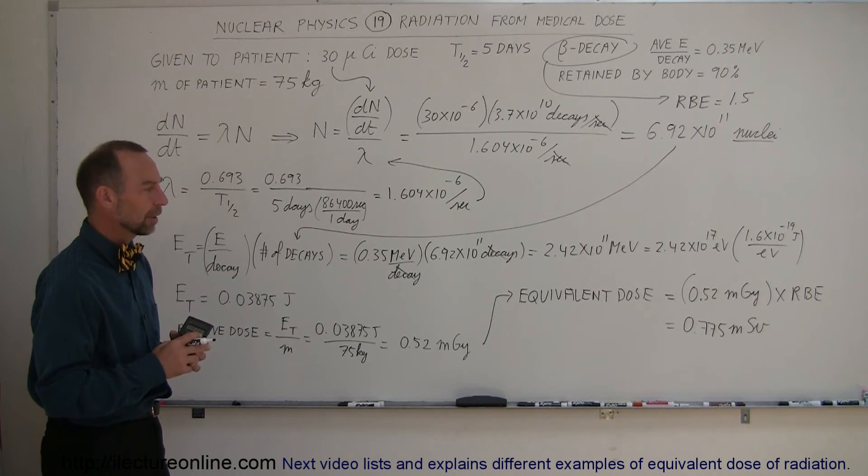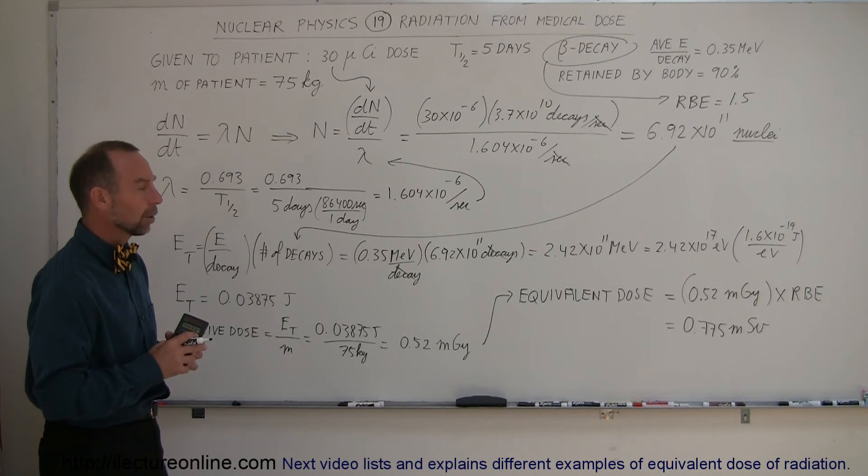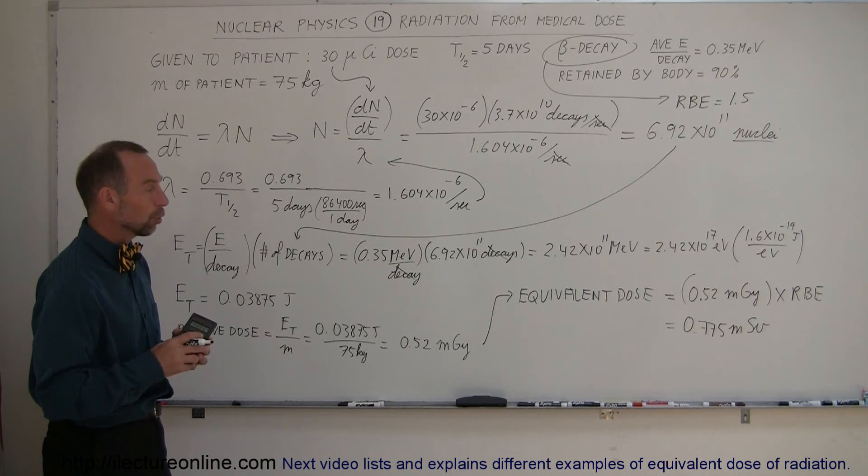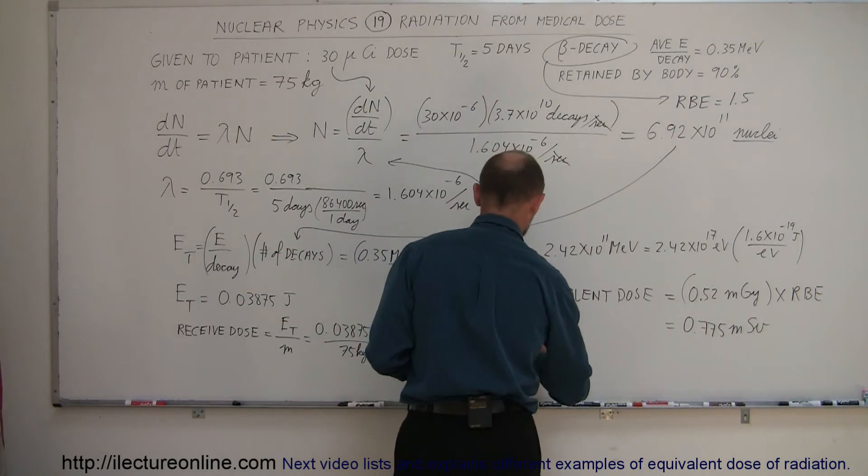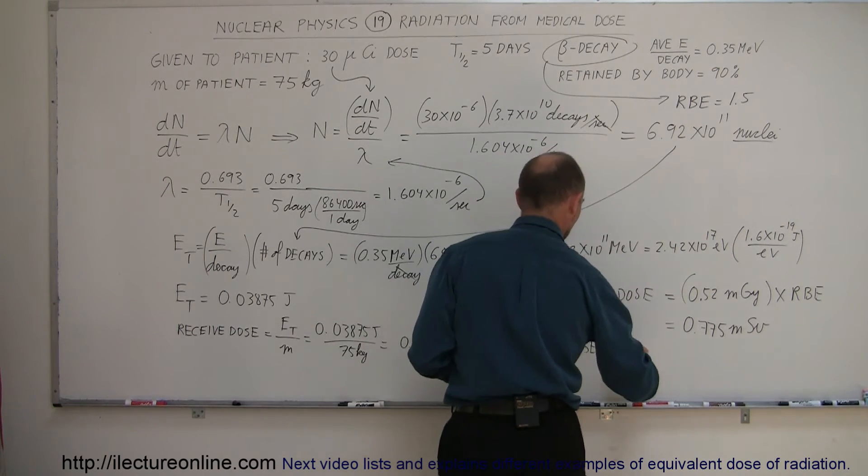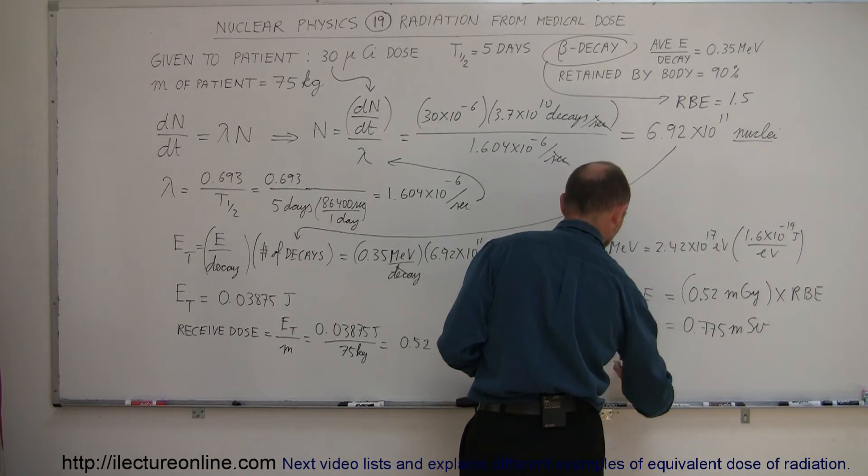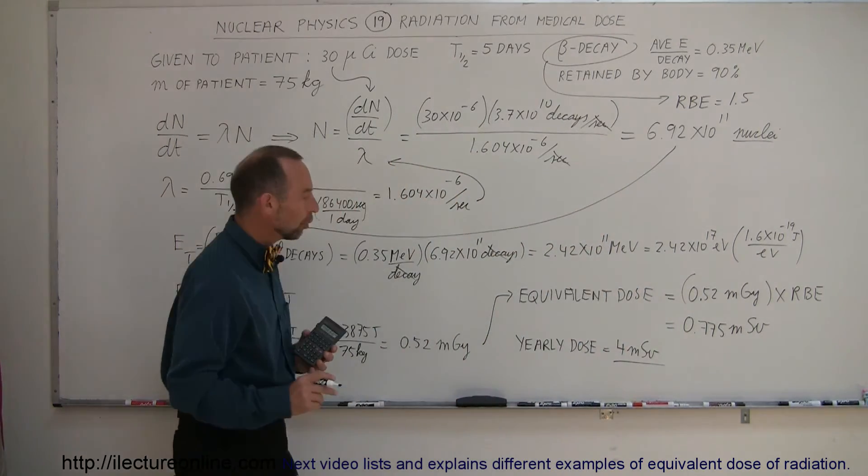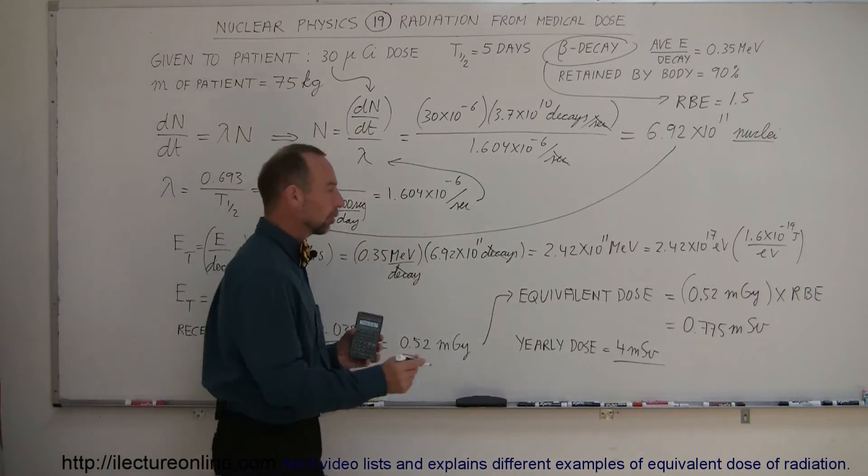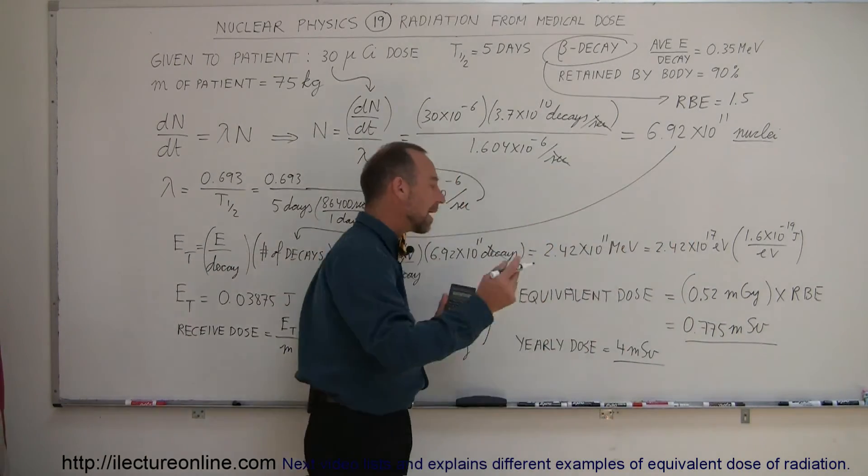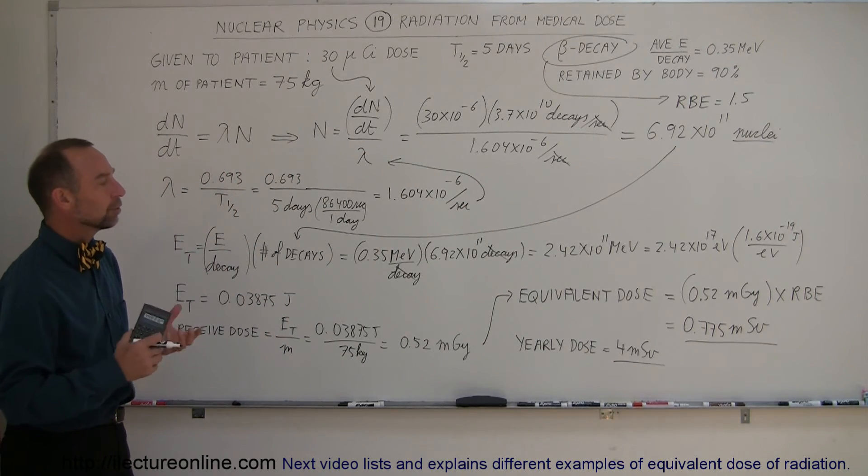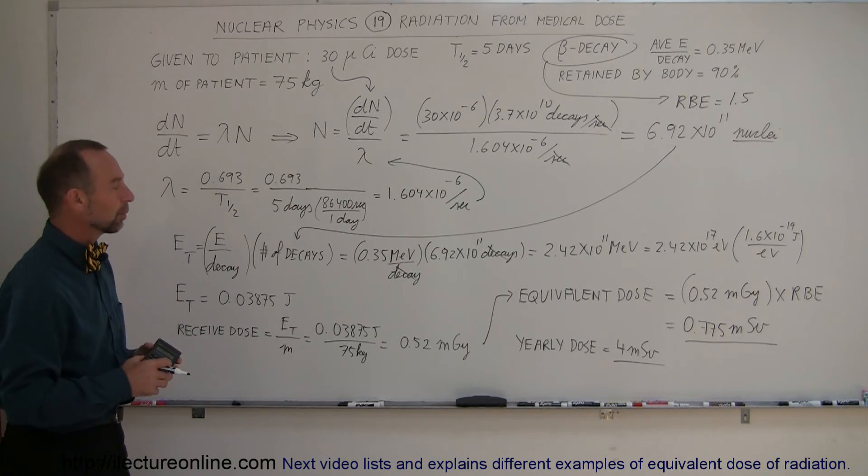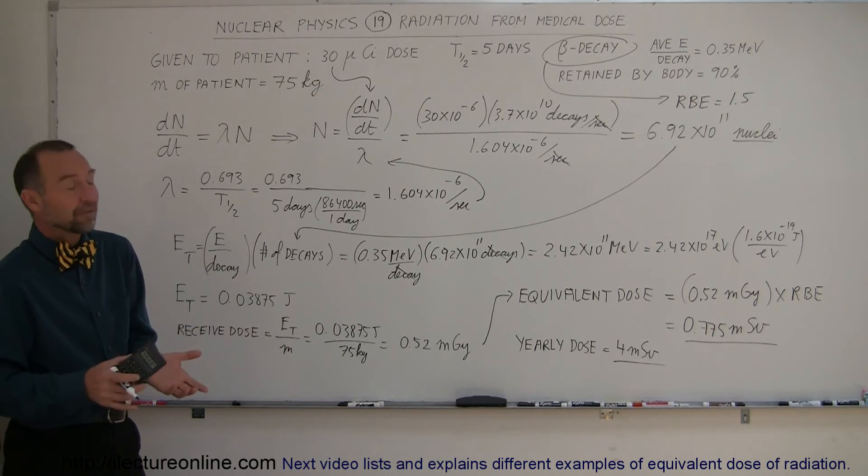All right, now is that a significant amount of medicine? Well, let's compare that to what we normally receive during any given year living on the earth. The yearly dose to natural causes is equal to about four millisieverts. So if our yearly dose to natural causes is four millisieverts and the amount of dose that we receive from the medicine is about one-sixth of that, that means that we would have increased our yearly dose by about a sixth from what we normally would receive. So therefore it is significant in that respect but not harmful in any way to the body.